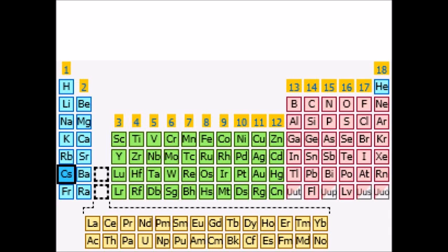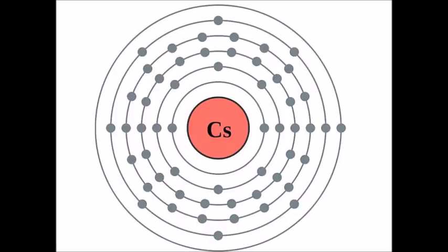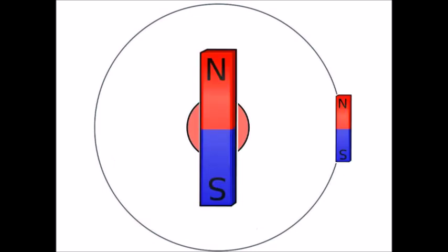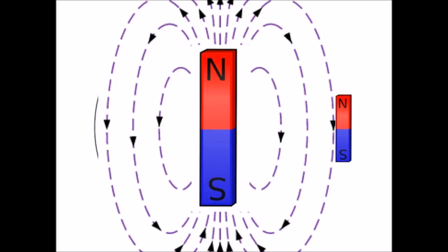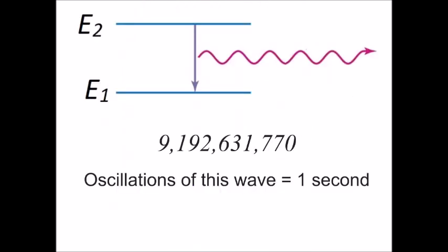There it is in the lower left-hand corner of the periodic table — cesium, an alkali metal. That means it's got just one outer electron in that final shell. Because quantum mechanics is a thing, the nucleus and that outer electron both act like tiny magnets. The electron is in the magnetic field of the nucleus and has a choice: it can either be oriented one way or the other, and this second orientation has a little bit less energy associated with it.